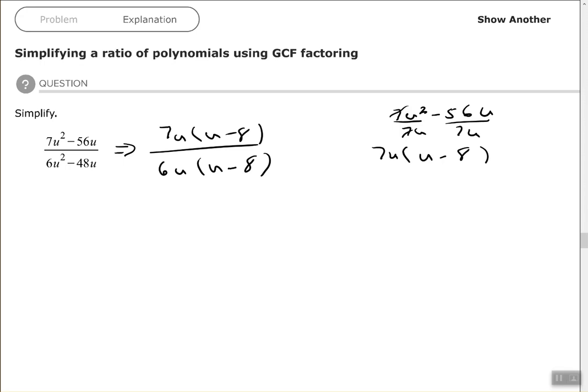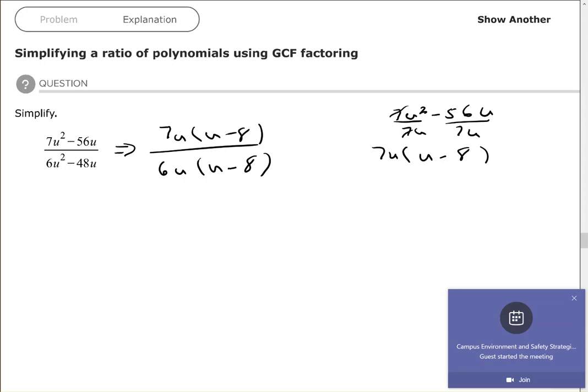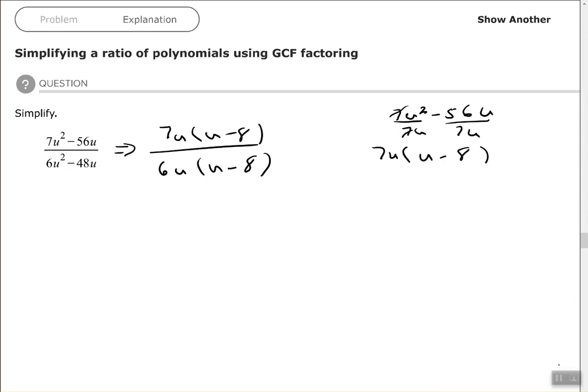Okay, so now we want to simplify. So we look at monomials and binomials. The monomials 7 over 6, sorry about that, monomials 7 over 6 cannot be simplified.